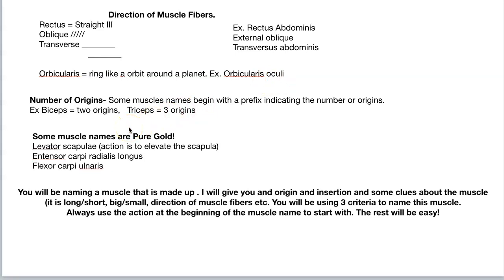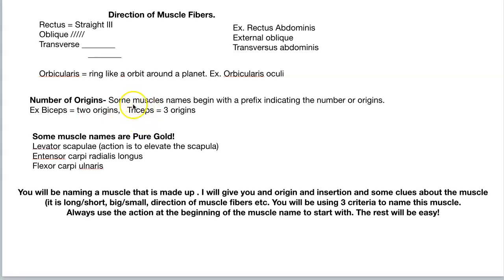Some muscle names begin with a prefix indicating the number of origins the muscle has. The biceps — if it starts with 'biceps' — is going to have two origins. You'll have the biceps brachii and the biceps femoris; both of those muscles have two origins. Then we have the triceps — I think that's the only triceps in the body, the triceps of the upper arm — and it has three origins.